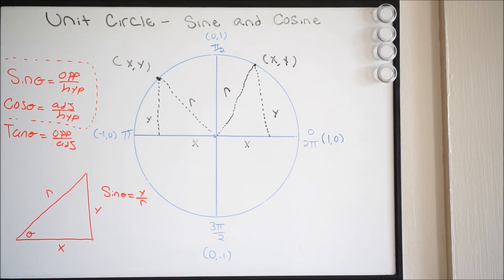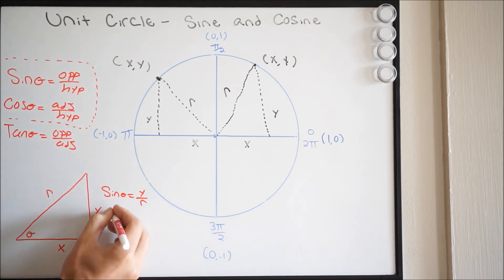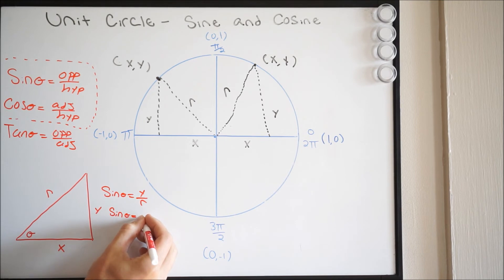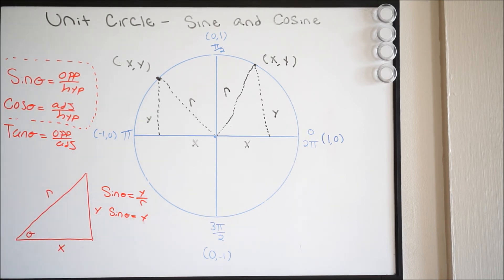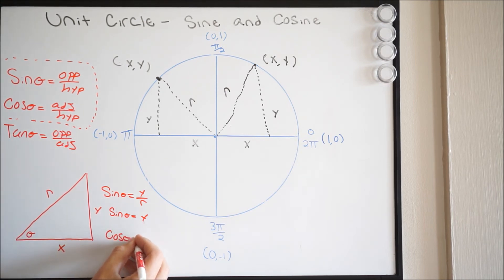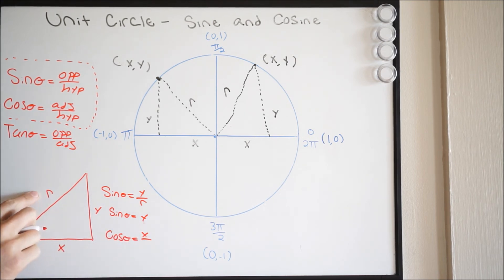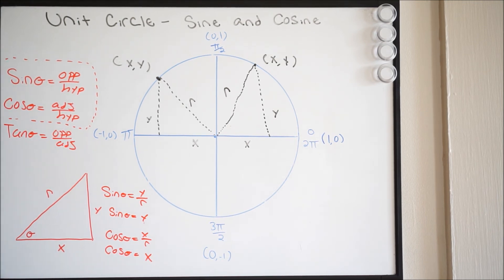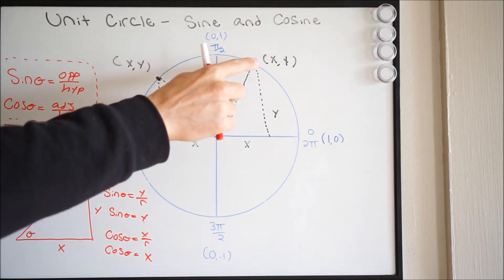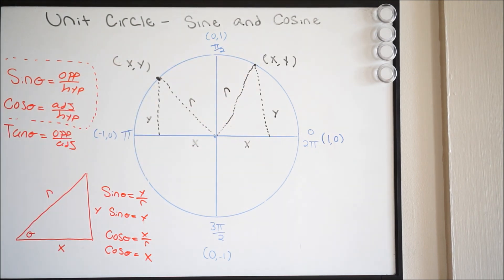Well, we know the radius is going to be 1, so this is simply just going to be sine theta equals y. So sine theta equals y. We can do the same thing for cosine: cosine theta is going to be adjacent, or x, all over hypotenuse, which is r. And again, r is equal to 1, so cosine theta is equal to x.